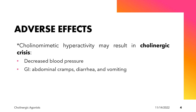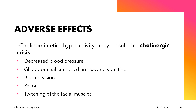In terms of the GIT, there is abdominal cramps, diarrhea and vomiting, blurred vision, miosis, and twitching of the facial muscles. These signs can be reversed by the administration of the anticholinergic drug atropine.